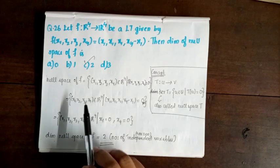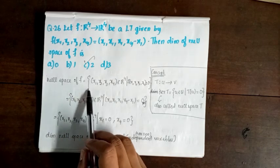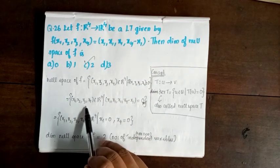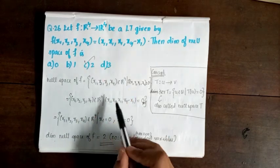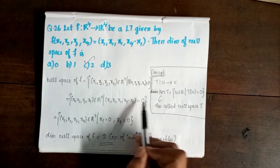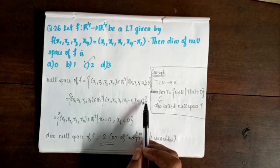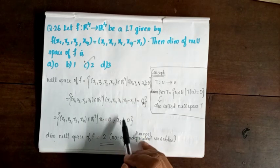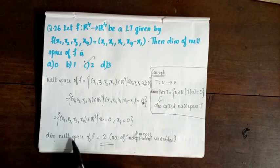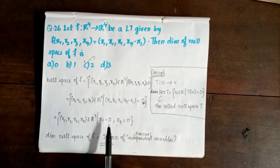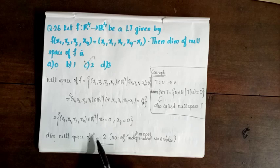Setting f(x1,x2,x3,x4) = (0,0,0,0) gives x1 = 0 and x4 - x1 = 0, so x1 = 0 and x4 = 0. The variables x2 and x3 are free. The dimension of the null space equals the number of free variables, which is 2.